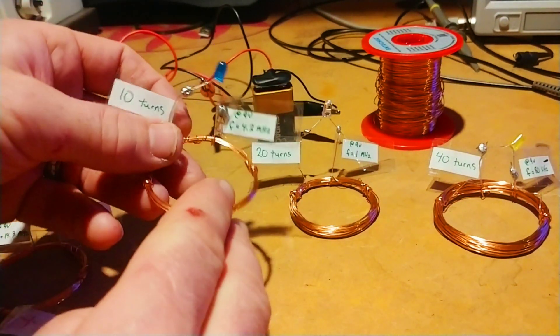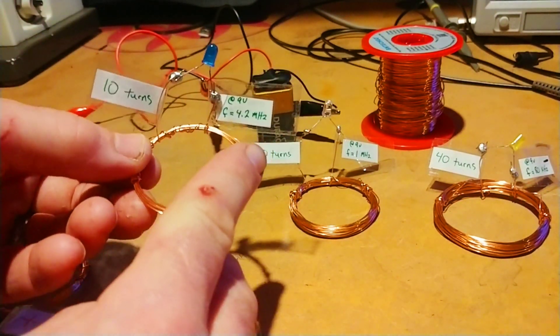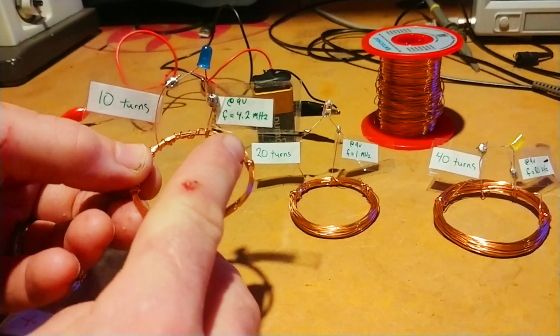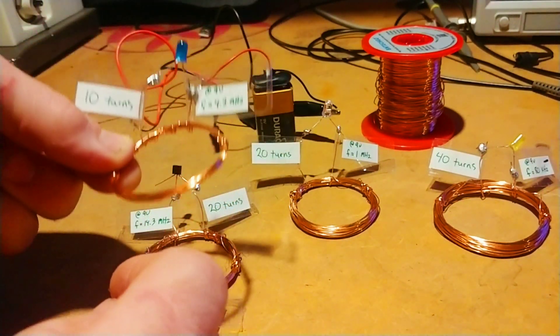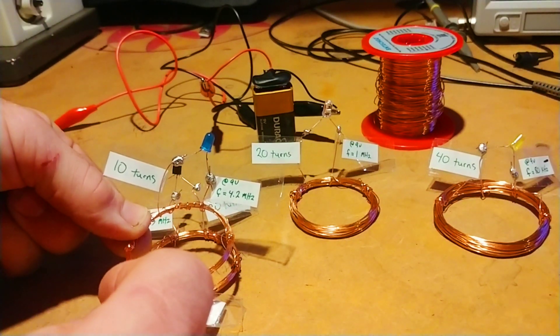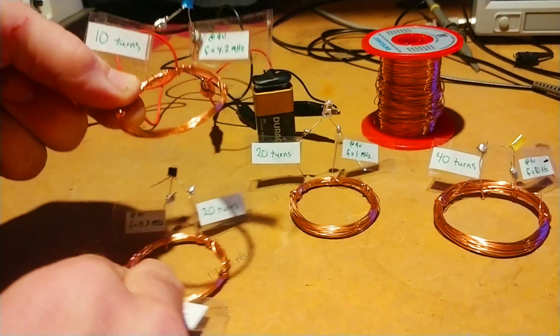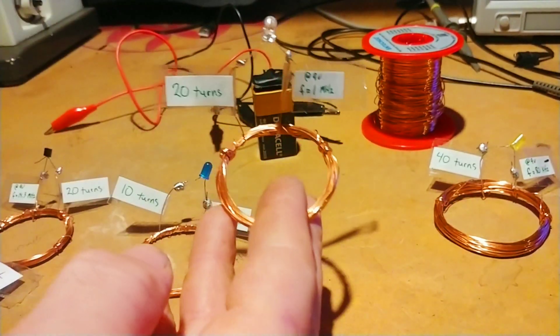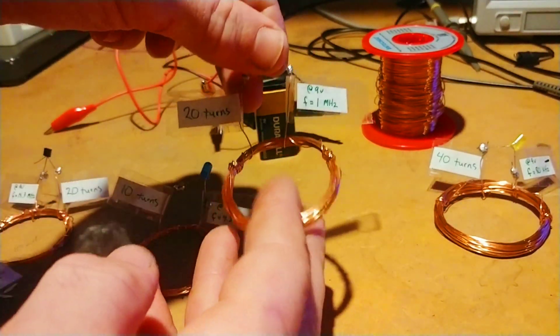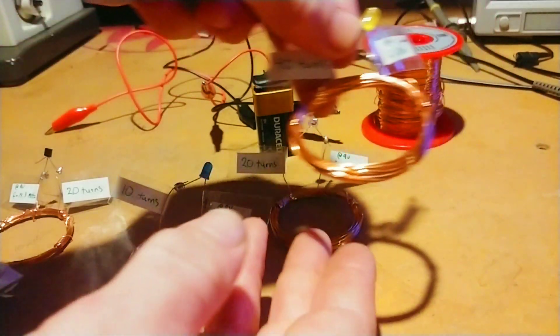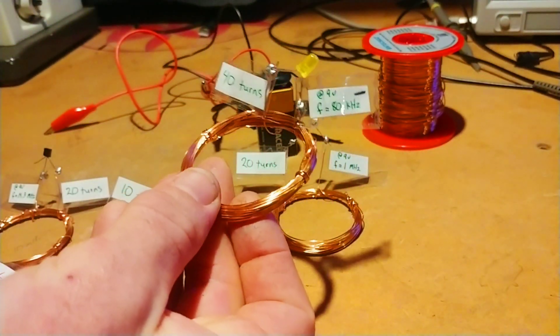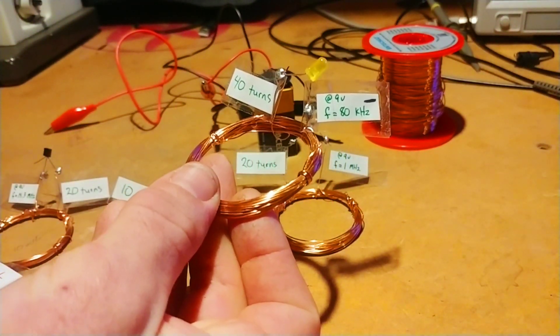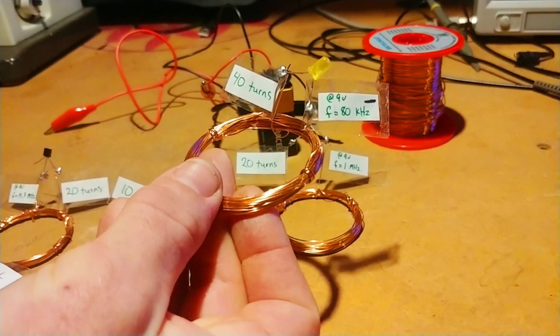First I did a 10-turn coil, and this operates at 4.2 MHz. When you bring it in close here, that's the frequency that this is receiving. Then there's a 20-turn coil. This operated at about 1 MHz. And then a 40-turn coil. That was down in the 80 kHz range and it varied. Sometimes it went over 100 kHz.